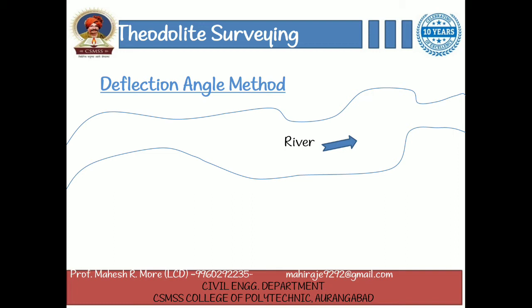Suppose an open traverse starts from point A. The theodolite is set up at point A and then centered and leveled. After this, the bearing of line AB is measured in the usual manner.